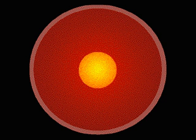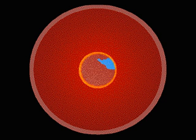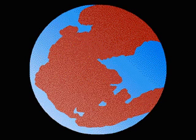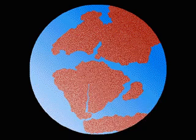The Earth's surface is constantly moving. At one time, some 200 million years ago, there was only one vast continent on the Earth — Pangaea. Over millions of years the land masses have moved and separated, and continue to do so today.